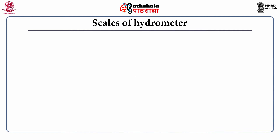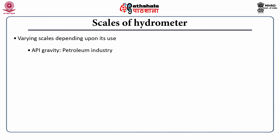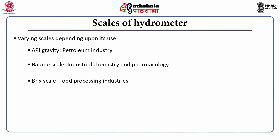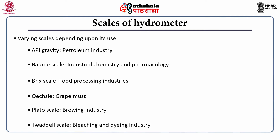The various scales of the hydrometer depend totally upon the usage. There is API gravity hydrometer, which is generally used in the petroleum industry. Baumé scale, which is used in industrial chemistry and pharmacology. Brix scale for food processing industries, Plateau scale for brewing industries, and Twaddle scale for bleaching and dyeing industry.